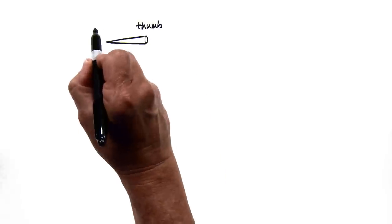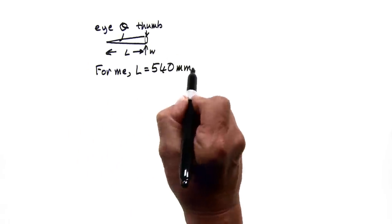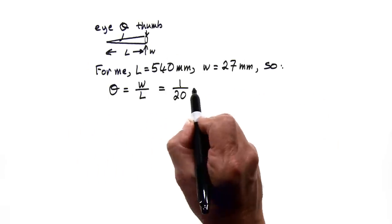In this diagram, W over L is equal to 1 over 20, and so theta is 1 20th of a radian.